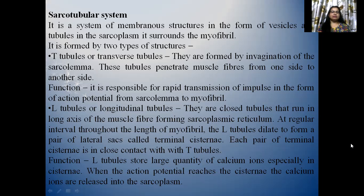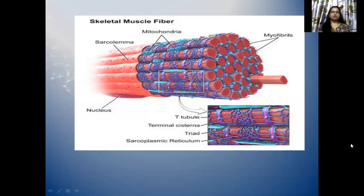Each pair of terminal cisternae is in close contact with T-tubules. Function: L-tubules store large quantities of calcium ions, especially in the cisternae. When the action potential reaches the cisternae, the calcium ions are released into the sarcoplasm. There is a diagram showing the sarcotubular system, T-tubules, terminal cisternae and sarcoplasmic reticulum.